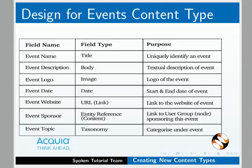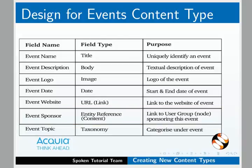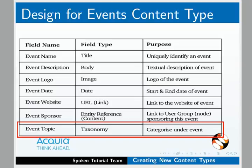Later, we will learn to include two more fields. Every event will be sponsored by a user group, which is another content type we will create in the next tutorial. Two nodes of two different content types are linked in Drupal using the entity reference field. An event topic is a taxonomy field which is used to categorize the event under various keywords.